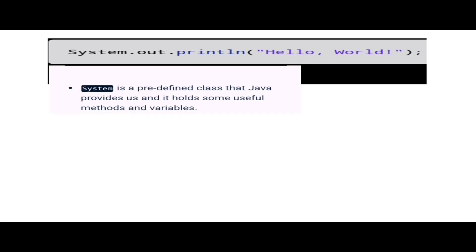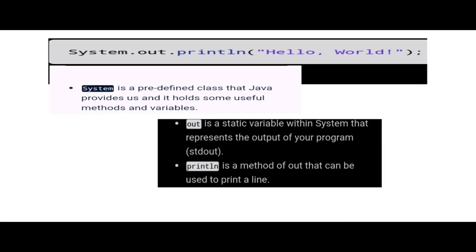Out is a static variable within System that represents the output of our program. println is a method that is used to print a line. In between the two quotations we will write our output statement which is to be printed.